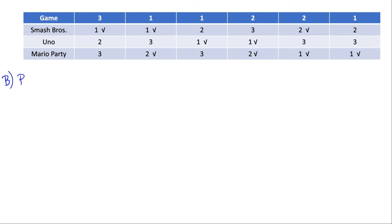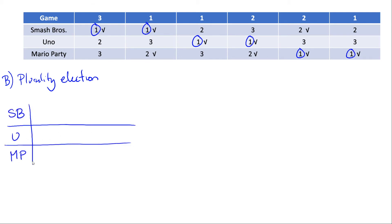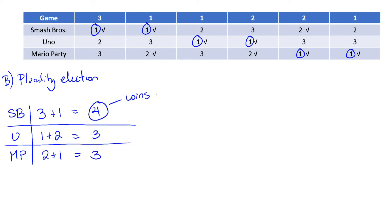Part B asks us to find the winner using plurality. In plurality, we only care about each group's first choice. Counting plurality votes: three people vote for Smash, then one more for Smash, then one and two people vote for Uno, and two and one people vote for Mario Party. That gives us Smash Brothers with four votes, Uno with three, and Mario Party with three. So Smash Brothers wins using plurality.